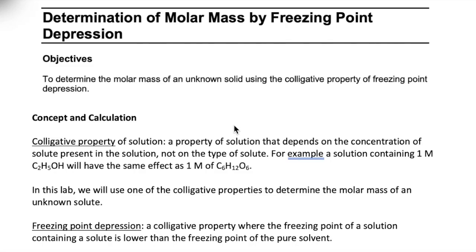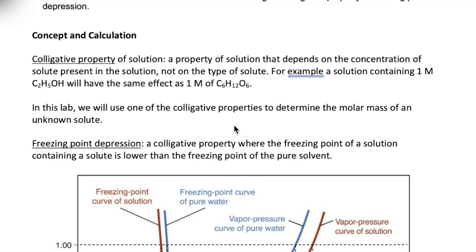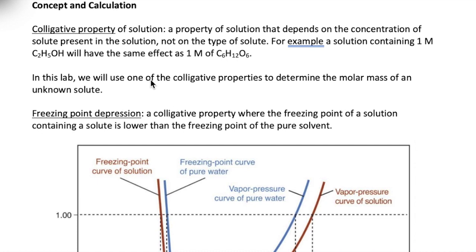Hi everyone, welcome to the video on the freezing point depression lab. Our goal today is to use a colligative property of solution that we discussed in lecture, freezing point depression, to determine the molar mass of an unknown solid. A colligative property is a property of solution that depends on the concentration of the solute present and not necessarily on the type of the solute.